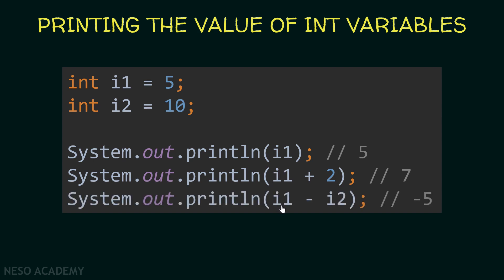And the same happens over here. I'm printing i1 minus i2. So the value of i1 is equal to 5 and the value of i2 is equal to 10. So over here we have 5 minus 10, so minus 5 will be printed. And also i1 will remain equal to 5 and i2 will remain equal to 10. We are not modifying these variables. We are just using their value. And remember this over here is called an expression.